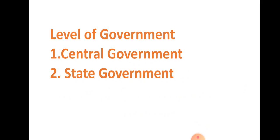India has a federal setup, which means that we have two levels of government. One is central government and the second is state government. The central government is also known as the union government, and the state government works for the state.